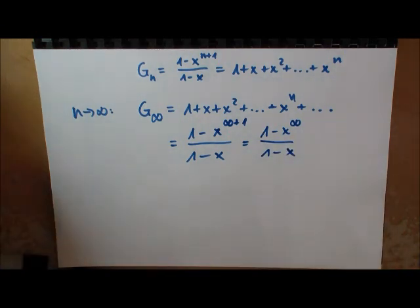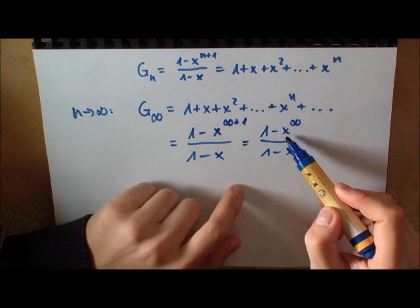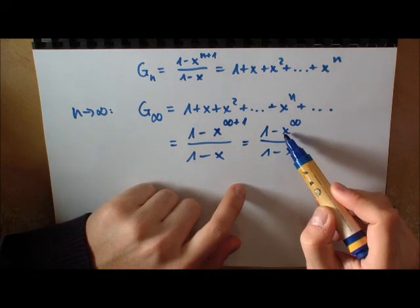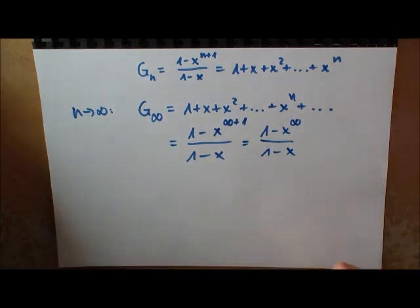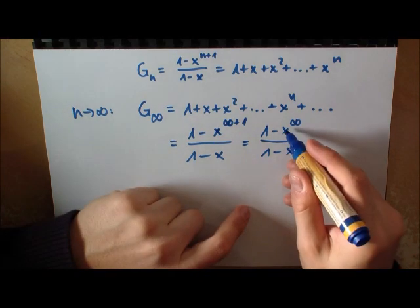But if you look at this, this has to be limited in some way. For example, if I took 2, if I took 2, then we had 2 to infinity. This would be an infinitely large number. This would not help us.